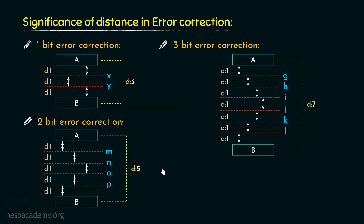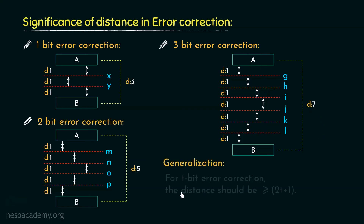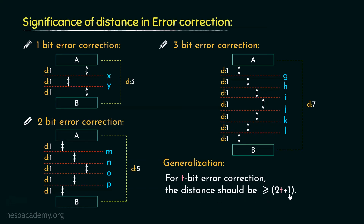Notice the pattern. For 1-bit error correction, the distance is 3. For 2-bit error correction, the distance is 5. And for 3-bit error correction, the distance is 7. So in general, for T-bit error correction, the distance should be greater than or equal to 2T + 1, which is popularly known as Hamming distance for error correction.